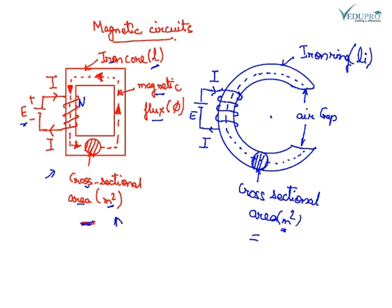However, in this arrangement there is an air gap of length LG meters and the cross-sectional area is m square. In ring type construction, the length is circumferential length.